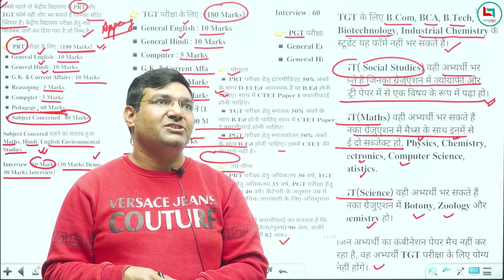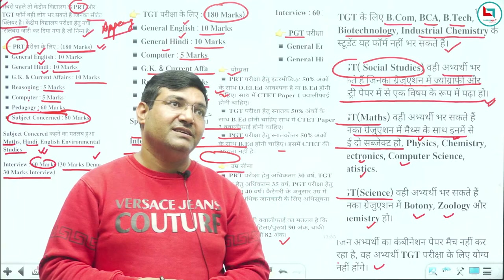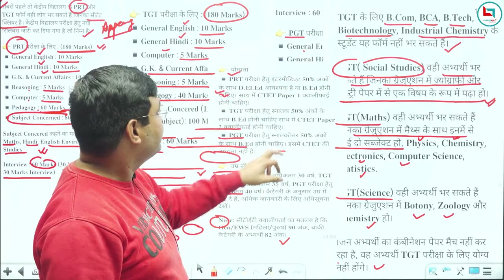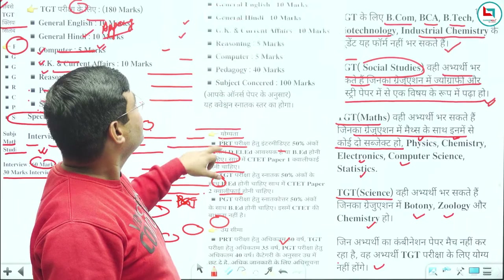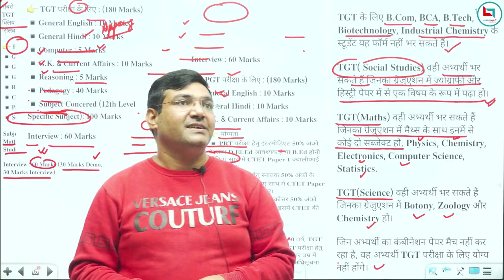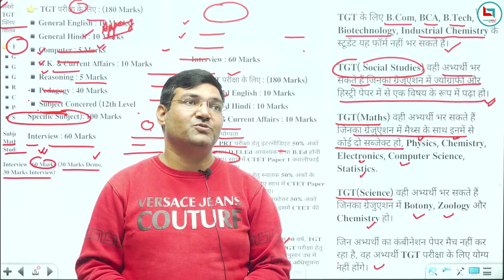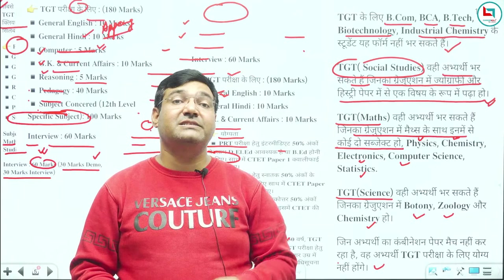Regarding PGT interview — interview is there in all three: PRT, TGT, and PGT. It is 60 marks in all three. I have already told you — PGT interview is 60 marks. Yes, absolutely you can prepare and try — you must fill the form. UPTGT literature batch — we are working on that, very soon. But first the KVS batch will come, then others, because other batches have already started.